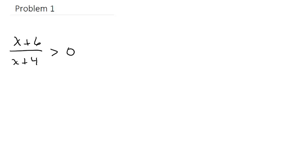When you're solving a rational inequality, you want to make sure you have the rational expression on one side and 0 on the other. The first thing we need to do is take the numerator and the denominator and set those equal to 0.